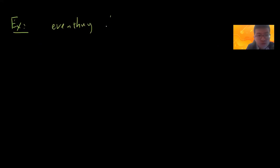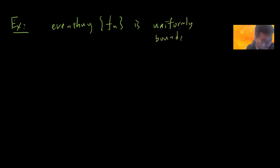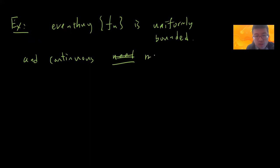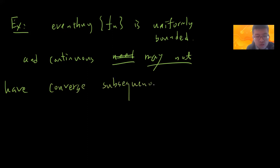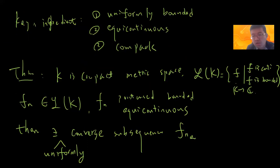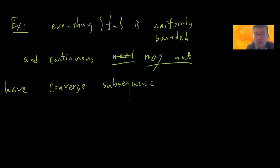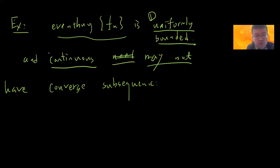One example: even though f_n is uniformly bounded and continuous, it may not have a convergent subsequence. The key idea of Arzelà-Ascoli is that people spent a lot of time trying to find sufficient conditions under which you can find a uniformly convergent subsequence. I'll show you an example where even with uniform boundedness and every f_n continuous, you cannot get a convergent subsequence.